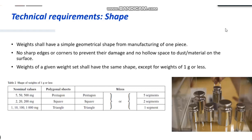For nominal values starting with five — for example, 500 or 550 milligrams — if it's polygonal sheets, it has to be in the shape of a pentagon. If it's wires, it can be five segments or a pentagon shape. For nominal values starting with the digit two, such as 200 milligrams, the polygonal sheet shape will be a square, or wires of two segments. For one, it is a triangular shape or wires of one segment. These shapes for weights of one gram or less can be found in table two of the OIML document.